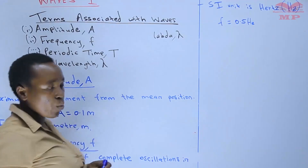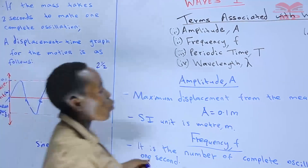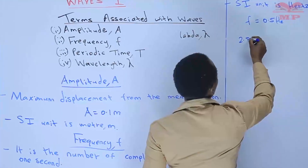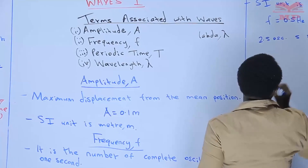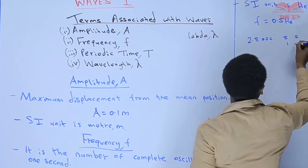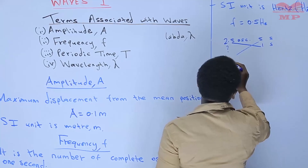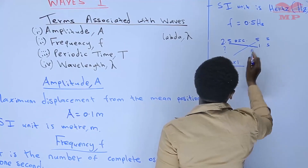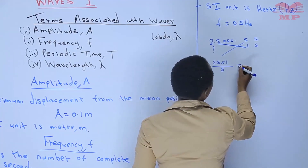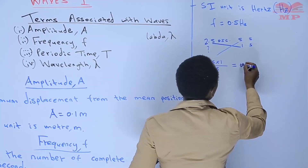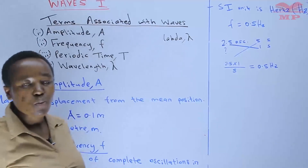Alternatively, we count the total oscillations: one, two, two and a half — so 2.5 oscillations covered in five seconds. We ask: how many oscillations in one second? We cross-multiply: 2.5 × 1 ÷ 5 = 25 ÷ 50 = 0.5 hertz. This is the same result. That is what we refer to as frequency.